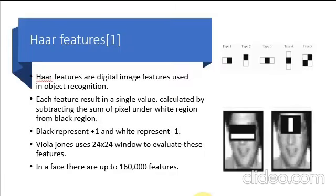Haar features are digital image features used in object detection. They owe their name to similarity with Haar wavelets and were used in the first real-time face detector. In the detection phase, a window of the target size is moved across the input image, and for each subsection, the Haar-like feature is calculated.